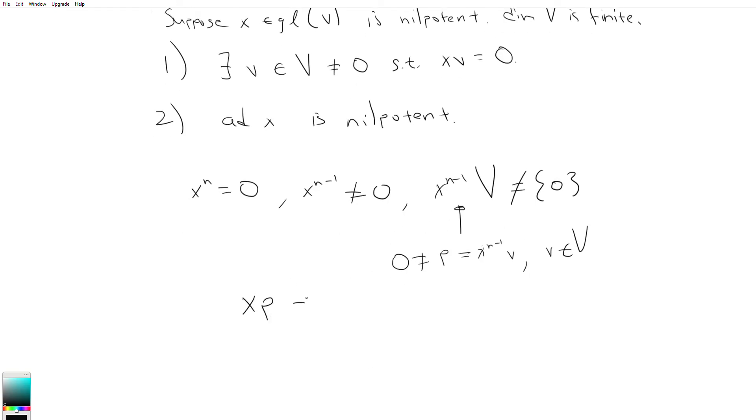Let us say x times p is equal to x times x to the n minus one times v, which is equal to x to the n times v, which is equal to zero times v, which is equal to zero. Done. So we found our v such that xv is equal to zero. In particular, it's this p, which is x to the n minus one times some v. So that is great. So this is proof for one.